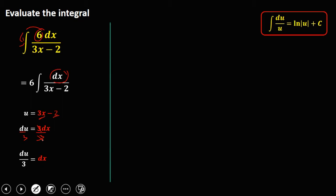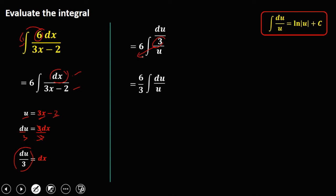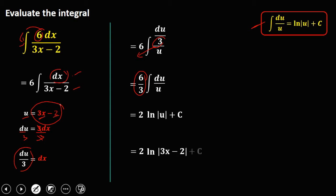Substituting, we have 6 times the integral of dx, which equals du over 3, and 3x minus 2 equals u. Putting the denominator 3 outside gives 6 over 3 times the integral of du over u. Simplifying 6 over 3 gives 2, so we have 2 ln of the absolute value of u plus c. Substituting u equals 3x minus 2, the answer is 2 ln of the absolute value of 3x minus 2, plus c.